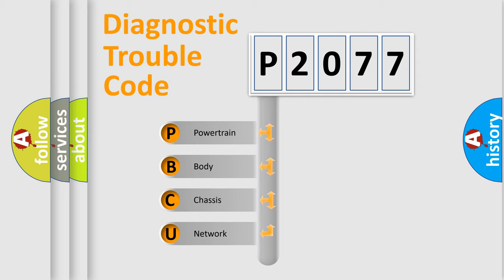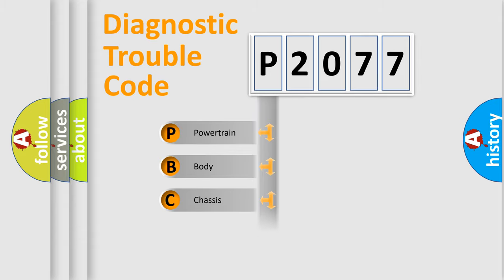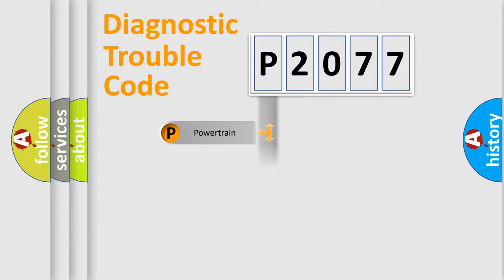We divide the electric system of an automobile into four basic units: Powertrain, Body, Chassis, and Network.